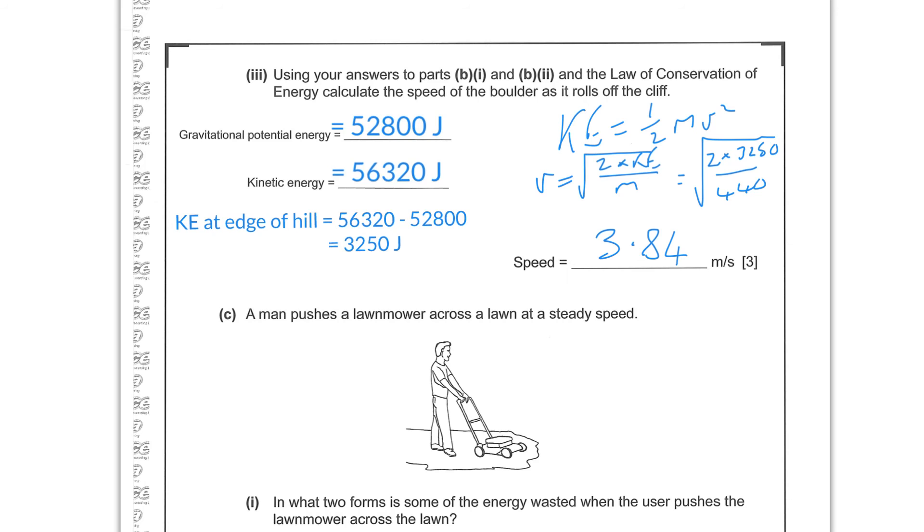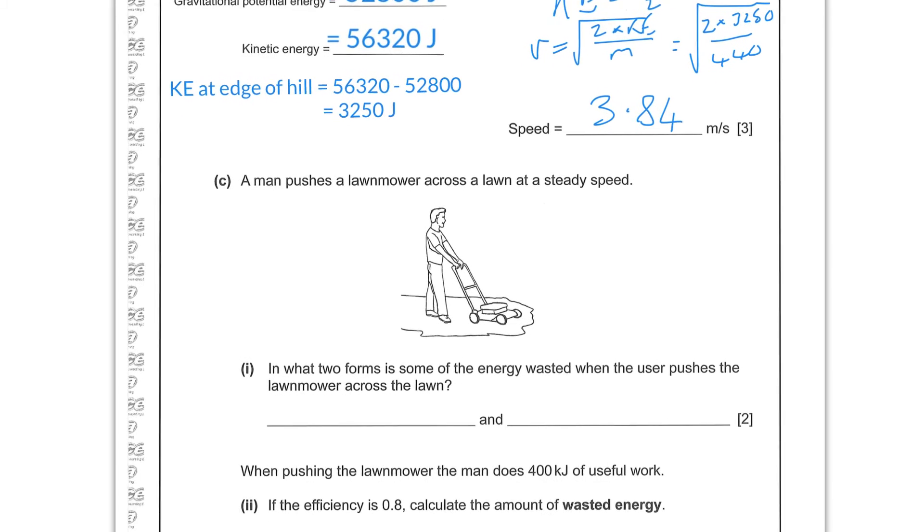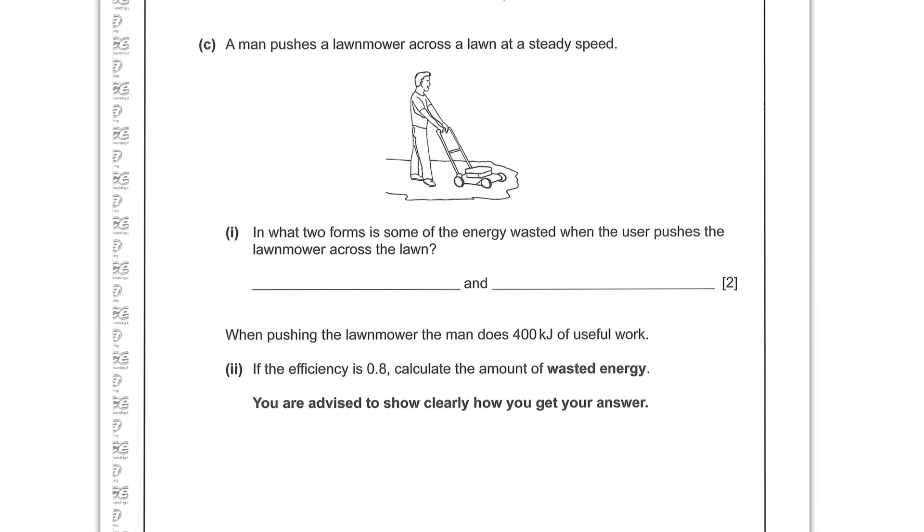Part C: A man pushes a lawnmower across a lawn at a steady speed. In what two forms is some of the energy wasted when the user pushes the lawnmower across the lawn? And these are absolute standard answers when any kind of mechanical activity, anything with moving parts, any machine, or in this case a person. When machines operate, you always get heat and you always get sound.